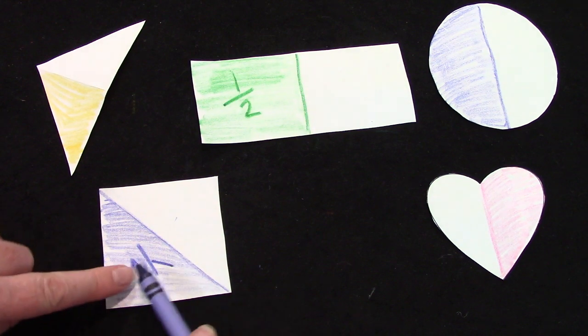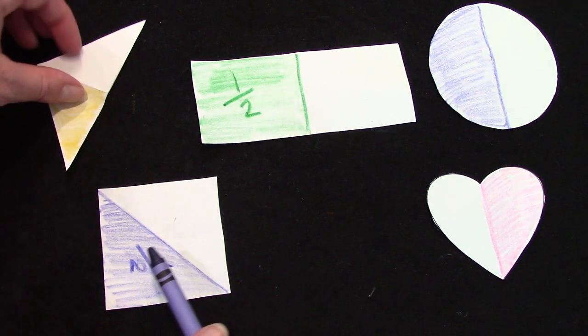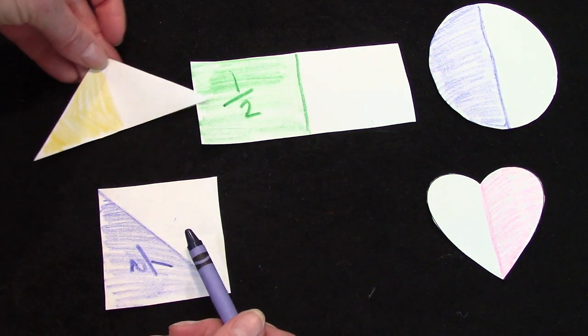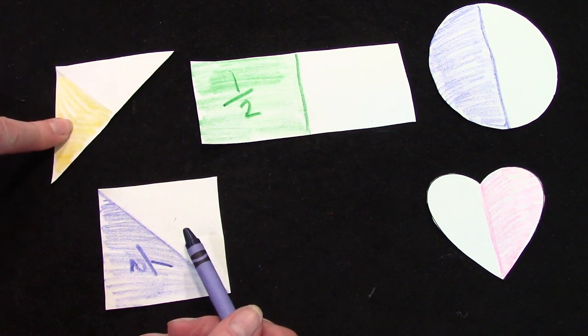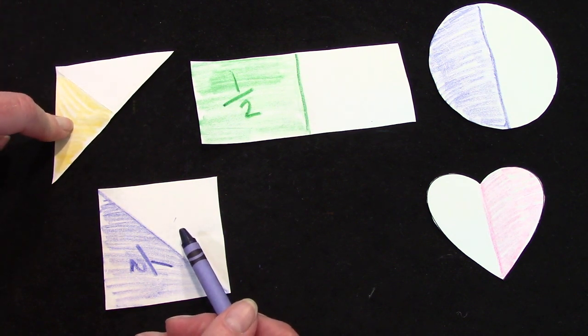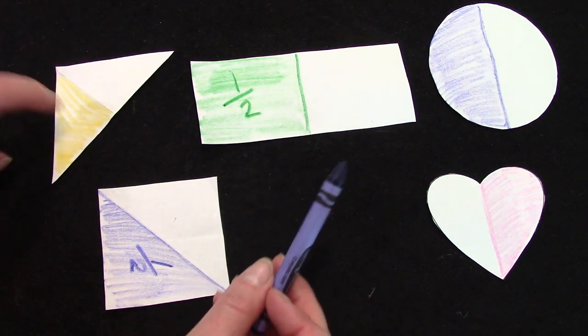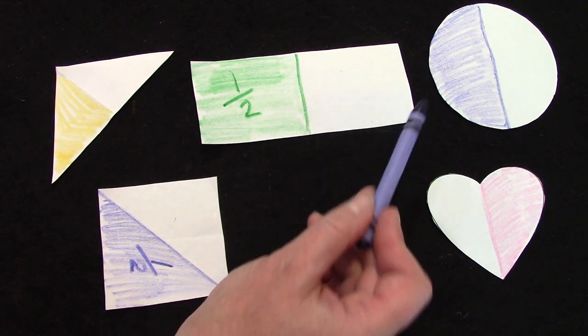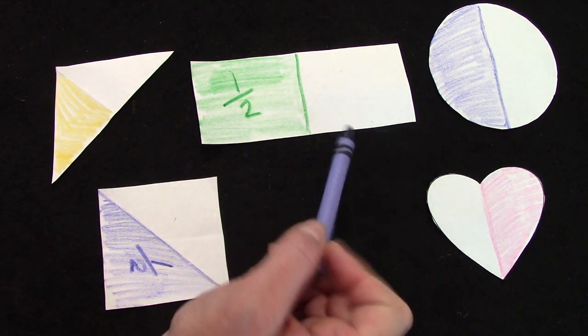Now we could have done this one two ways. There was really only one way to fold the triangle. But one of these shapes, we could have done it another way. Which one?